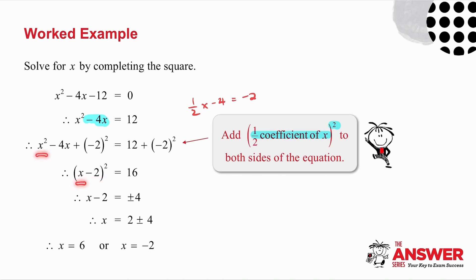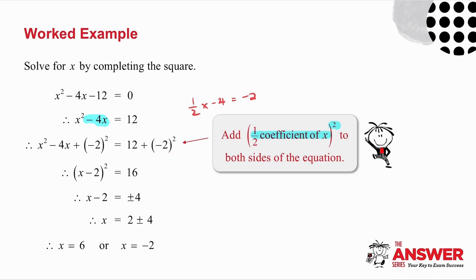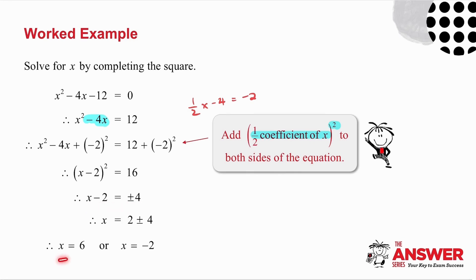This gives x minus 2, all squared, on the left side — square the first, twice the product, square the last. On the right side I get 12 plus 4, which is 16. Now I have an example exactly like the previous page: take the square root of both sides, don't forget plus or minus 4, take the minus 2 across to the other side, and you get your two answers.